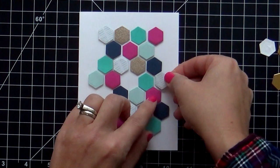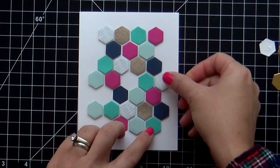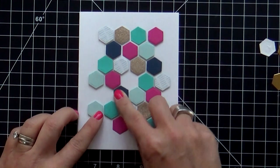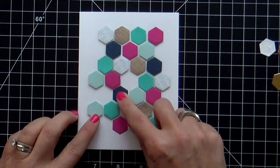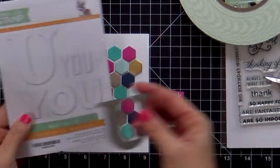And then I'll go ahead and adhere the rest of those hexagons, the gold foil ones that are off to the right. I'll pop those up with a little foam tape and we'll be good to go. Moving on to the sentiment.